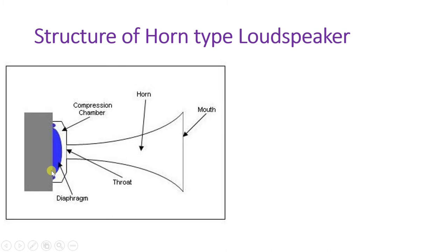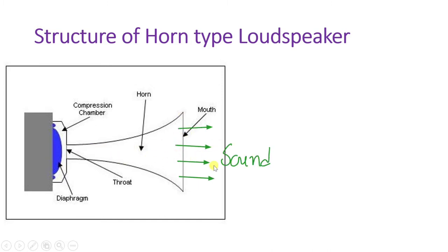Horn does acoustic transformation while cone does mechanical transformation. The structure is simple: there is a speaker, the sound goes into the compression chamber, and through the throat we release that sound via the mouth of the horn. Sound propagates in that direction.